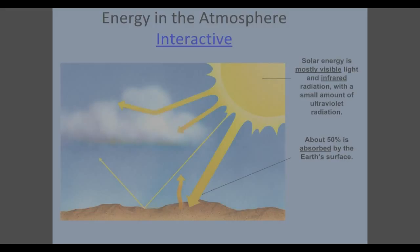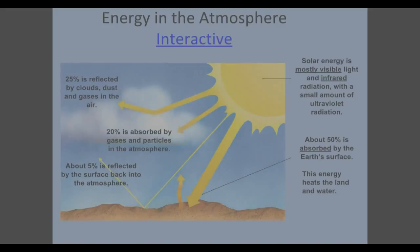Solar energy is mostly visible light and infrared radiation. It also has a small amount of ultraviolet radiation. This energy is the energy that heats the land and the water, both our infrared radiation and our visible light. Of that 100% of light that comes from the sun, after that 50% is absorbed, 25% gets reflected by the clouds and dust and gases in the air. For example, think about wearing a white t-shirt. That t-shirt reflects the light on a hot summer day and you don't feel nearly as hot as you would wearing a black t-shirt. About 5% of that light is reflected by the surface back into the atmosphere. And the last 20% is absorbed by gases and particles in our atmosphere. This makes up about 100% of the sun that comes in.